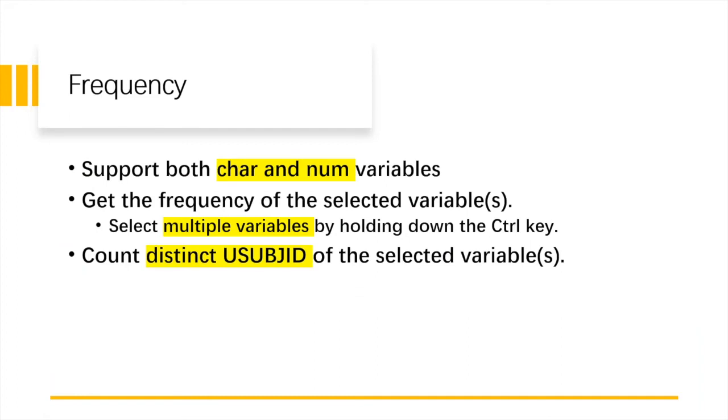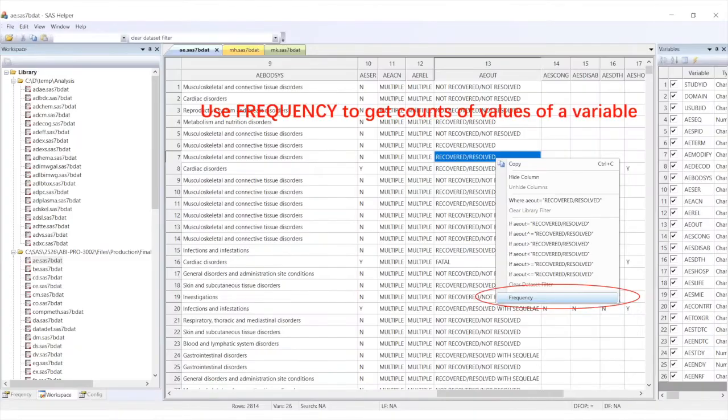For the frequency, in fact it's for the basic statistics. We only support frequency. But the frequency supports both character variables and numerical variables. And you can also quickly get the frequency for multiple variables. And also, we not just count the observations, we can also count distinct user subject ID.